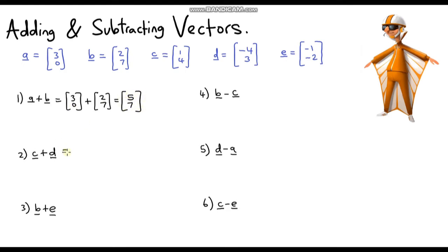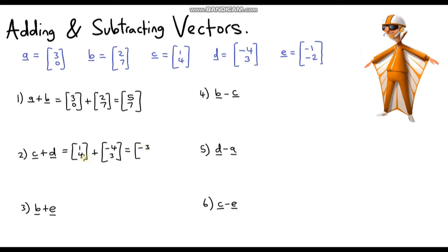Next, vector C plus vector D. Vector C is (1, 4) and we add vector D, which is (-4, 3). Our horizontal component is 1 subtract 4, which is negative 3. And our vertical component is 4 plus 3, which is 7. So the answer is (-3, 7).